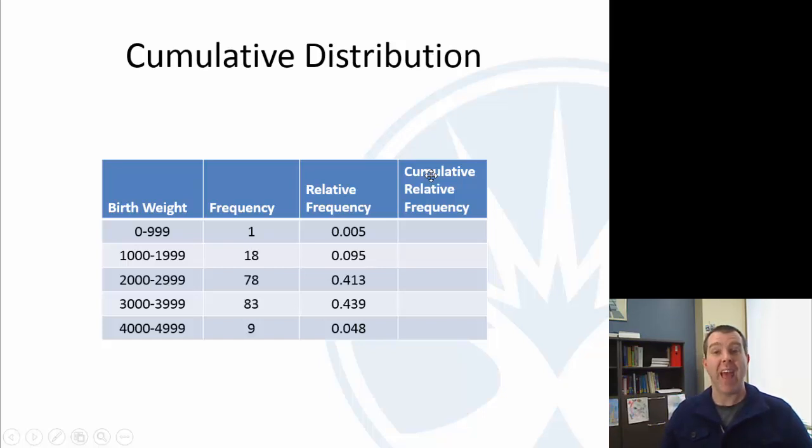So cumulative here just means to add up as you go. Cumulative relative frequency in the first class would just be the same. Up to 999 there is just the one and the relative frequency is 0.005. So for the next cell that will be cumulative up to 1,999, so you would need to add these two together to get that next value.